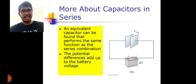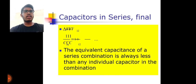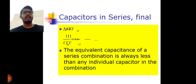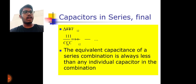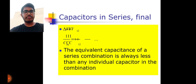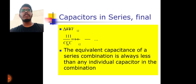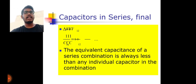In series, the current will be the same. The formula for capacitors in series is: 1 over C equivalent equals 1 over C1 plus 1 over C2 plus 1 over C3. The equivalent capacitance is always less than any individual capacitance in the combination. In parallel, C equivalent is greater than any individual capacitance C1 or C2.